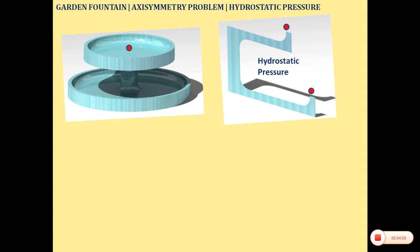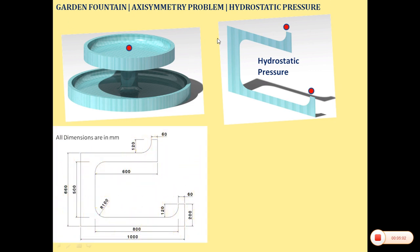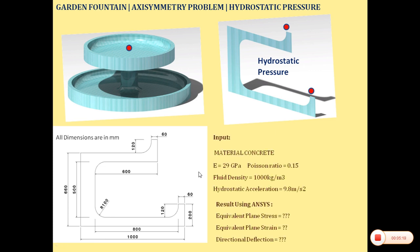Here we need to know the fluid density as well as the acceleration of the fluid. We have the cross section of this particular Garden Fountain. Because all the dimensions are in mm, we will use it in Design Modeler. The input conditions are: material is concrete, Young's modulus of elasticity is given, fluid density is 1000 kg per meter cube, and hydrostatic acceleration is 9.8 meter per second square. Using ANSYS we desire to get the equivalent von Mises stress, plane strain and the directional deflection.